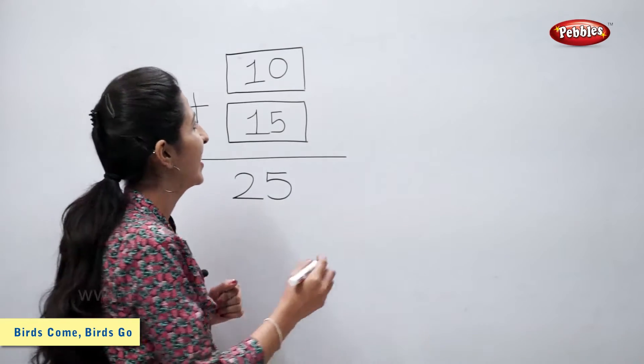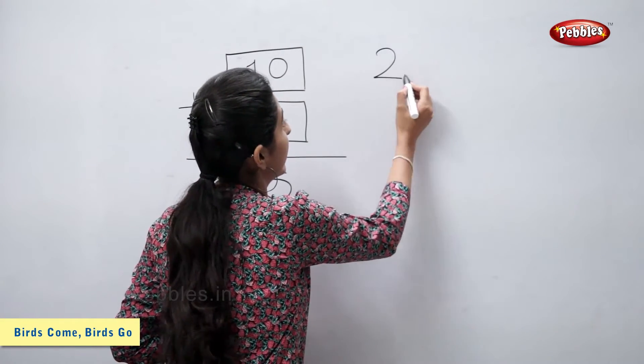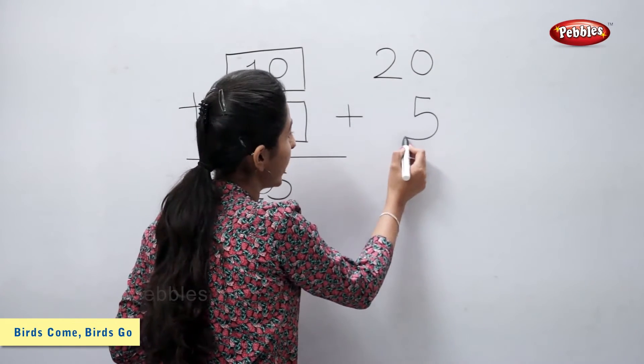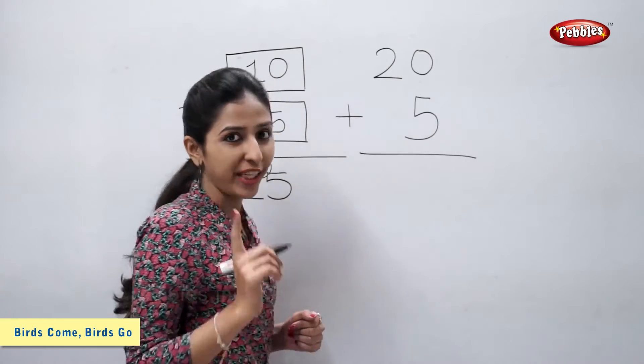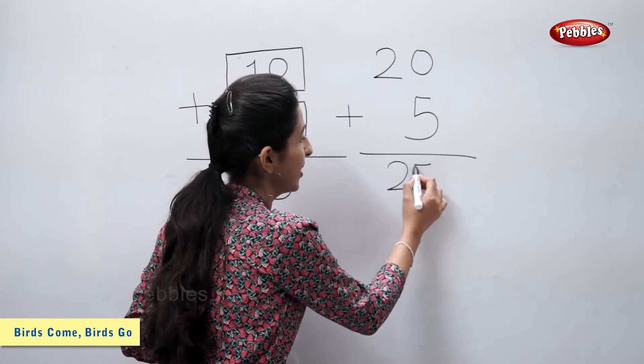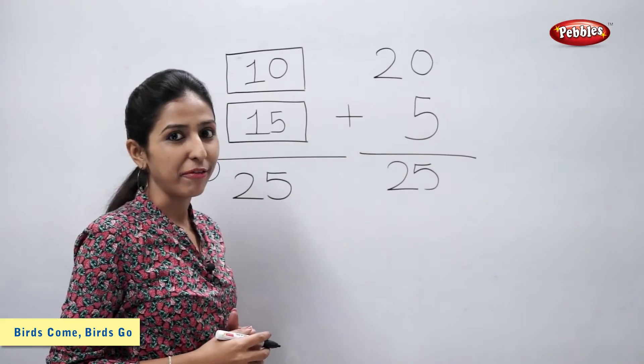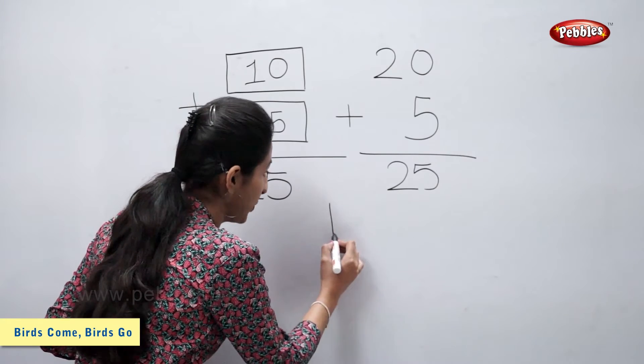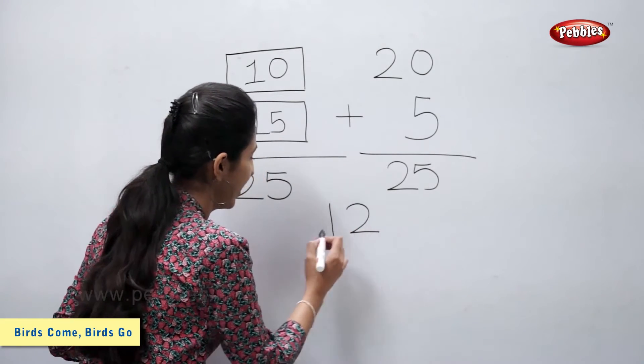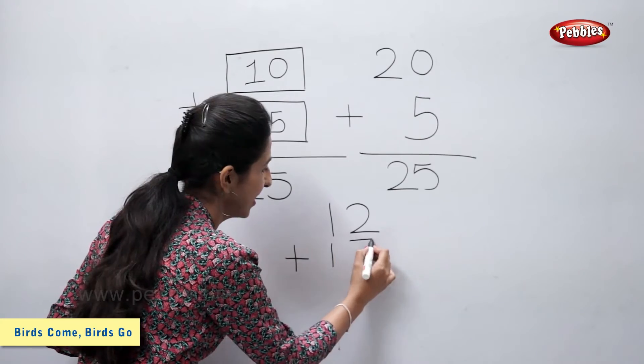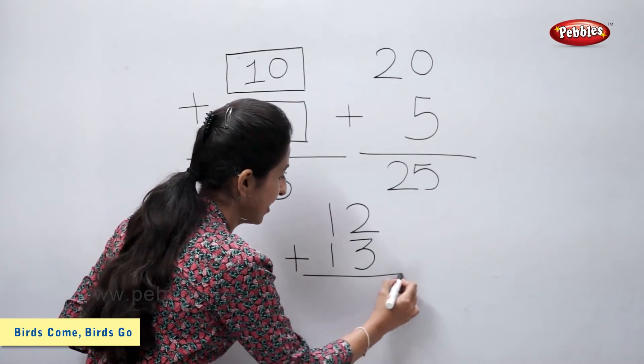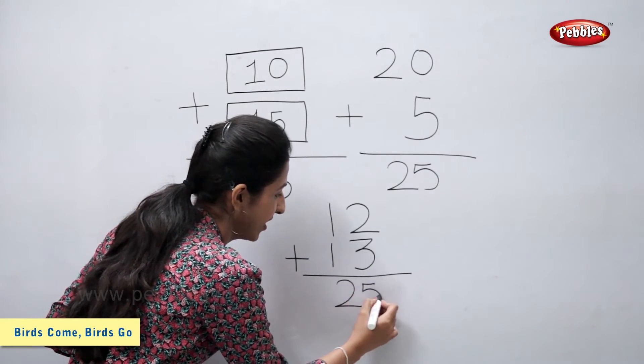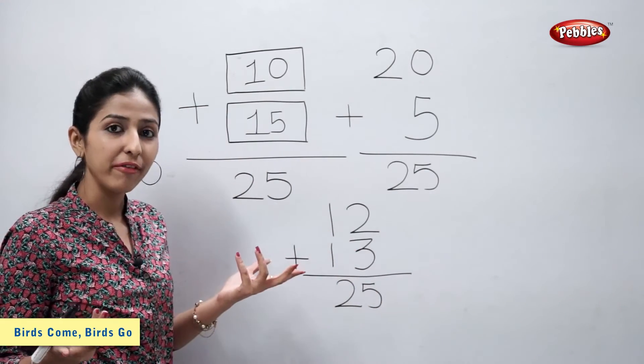I can write 20 plus 5 for getting 25. I can give you one more combination. 12 plus 13 is also equal to 25.